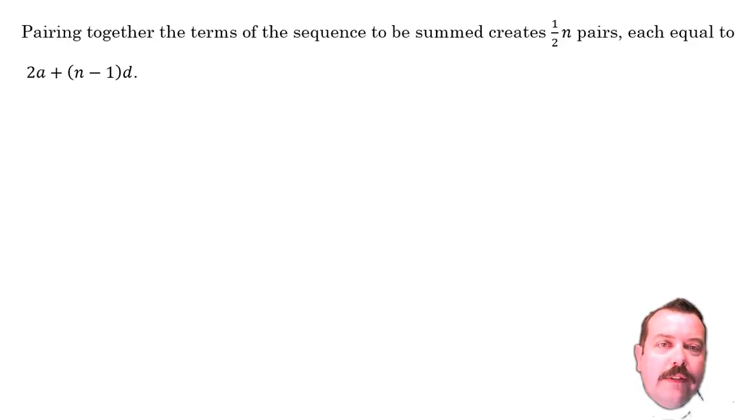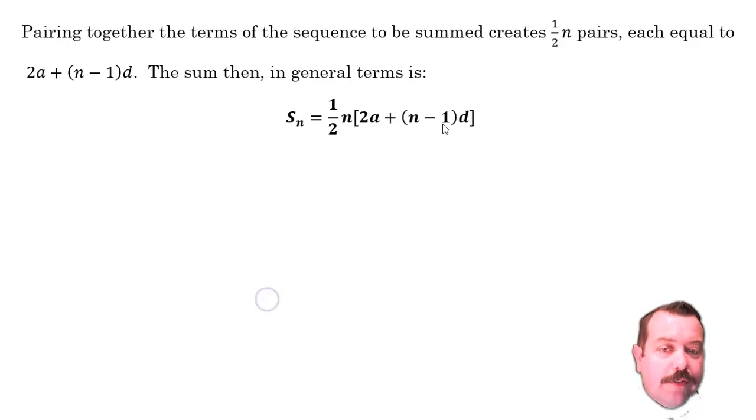Now that makes things fairly easy from here on because if I have n terms, I'll have half n pairs and all of those pairs have the same value. So to get the total adding all of those together, because they're all the same, I can do half n multiplied by the size of each pair which is 2a plus n minus 1 d. So there we go, we've arrived with the formula for the sum to n terms of an AP.